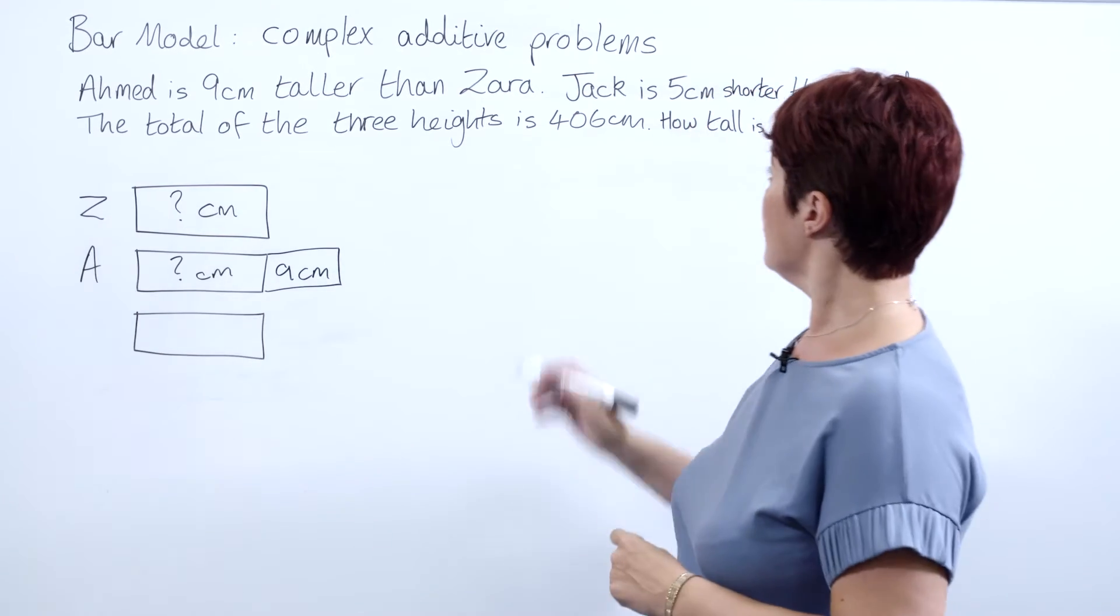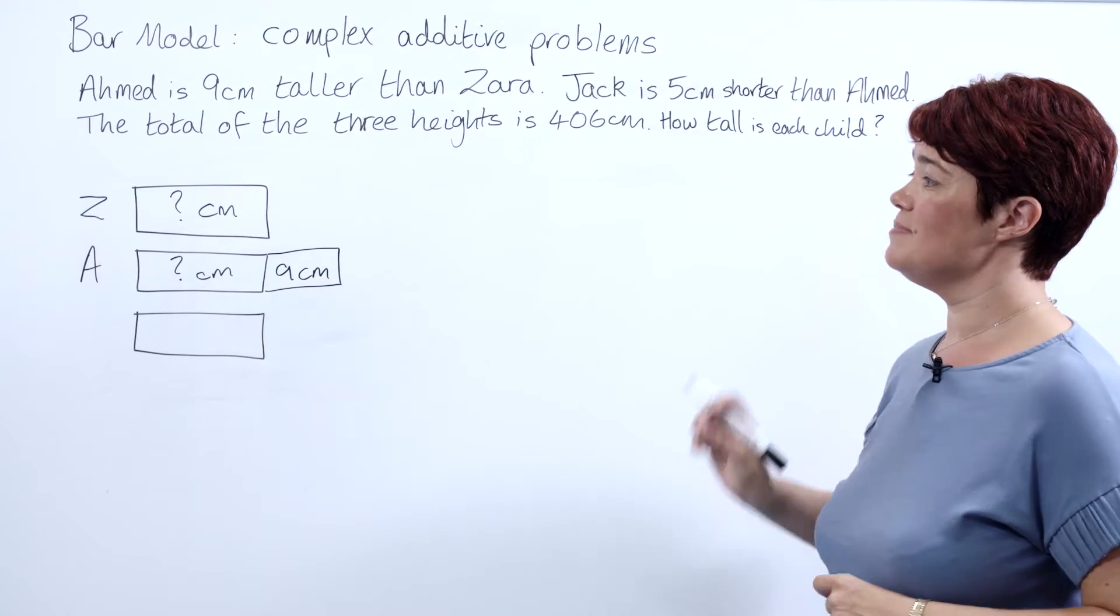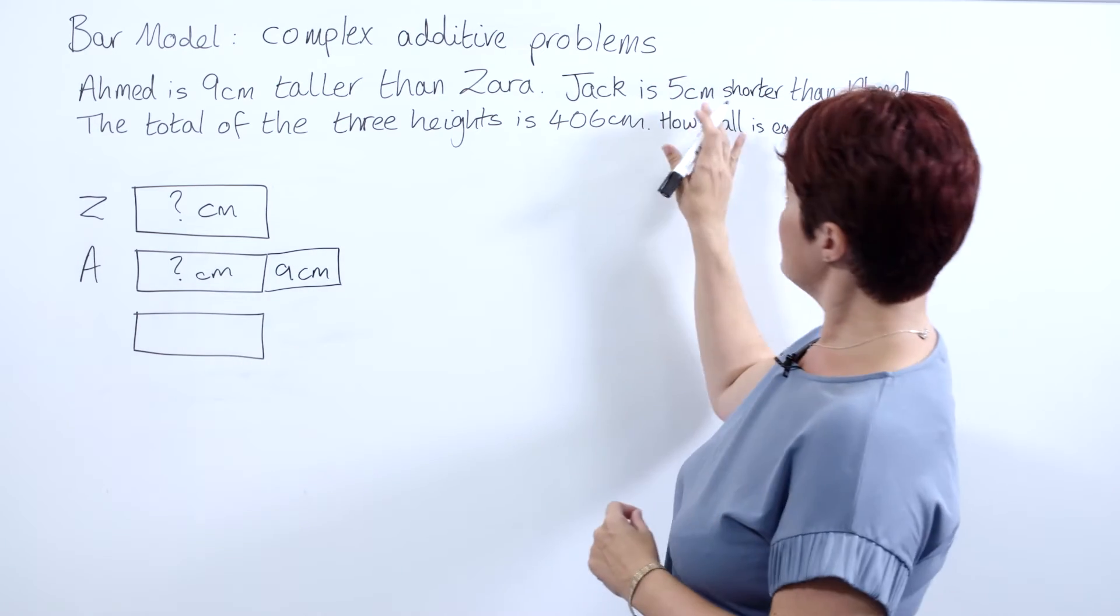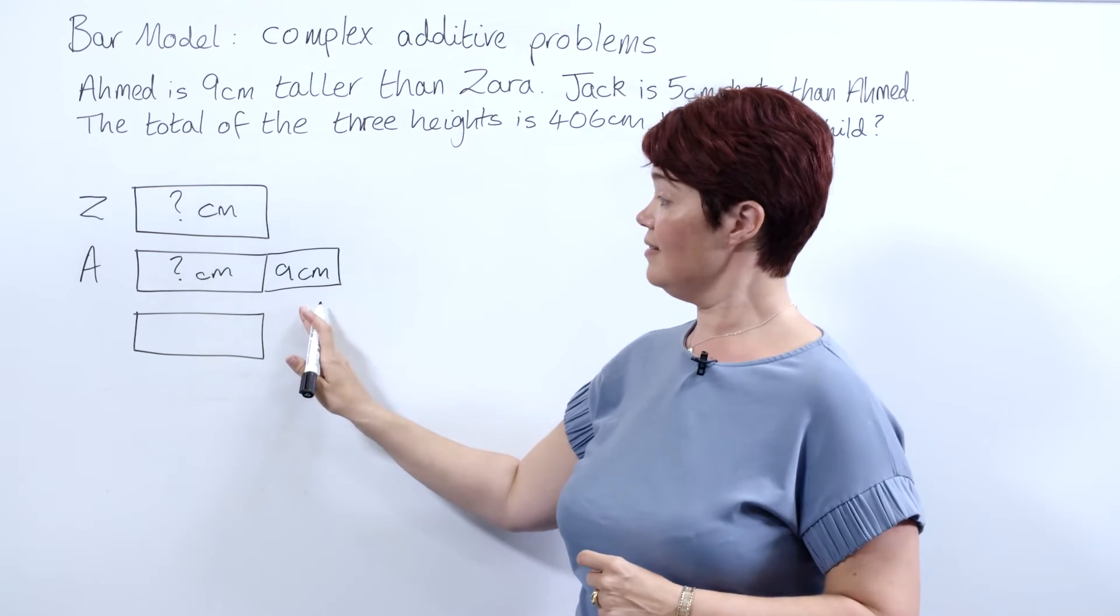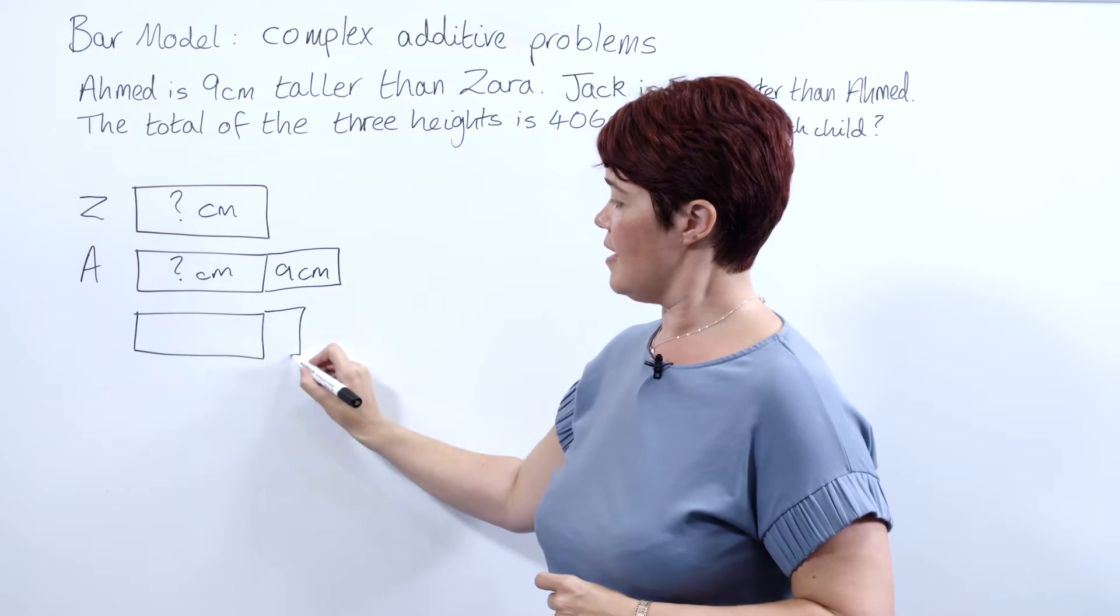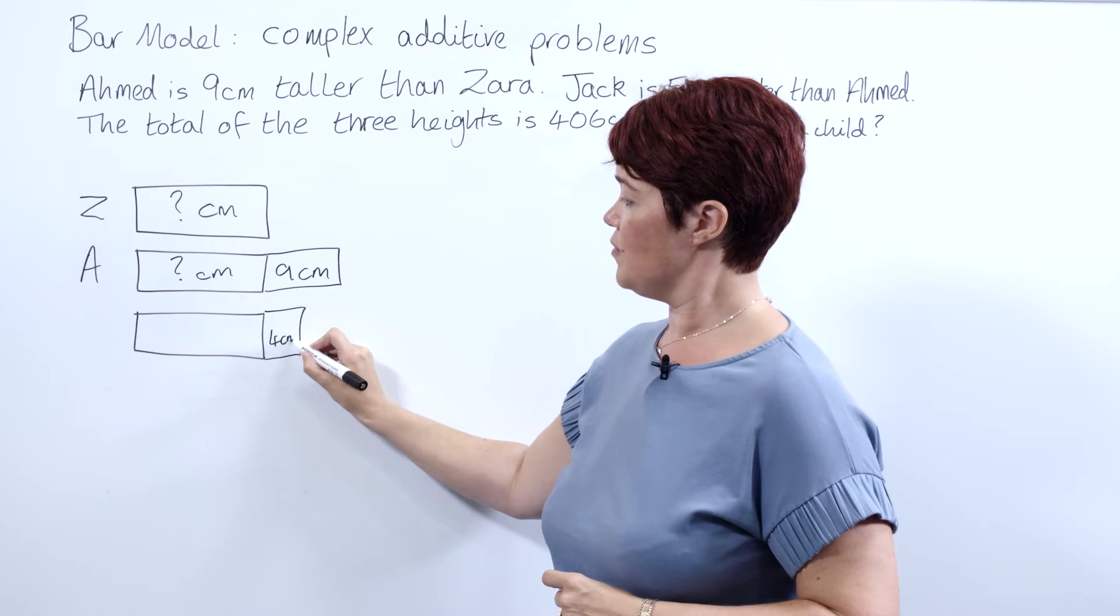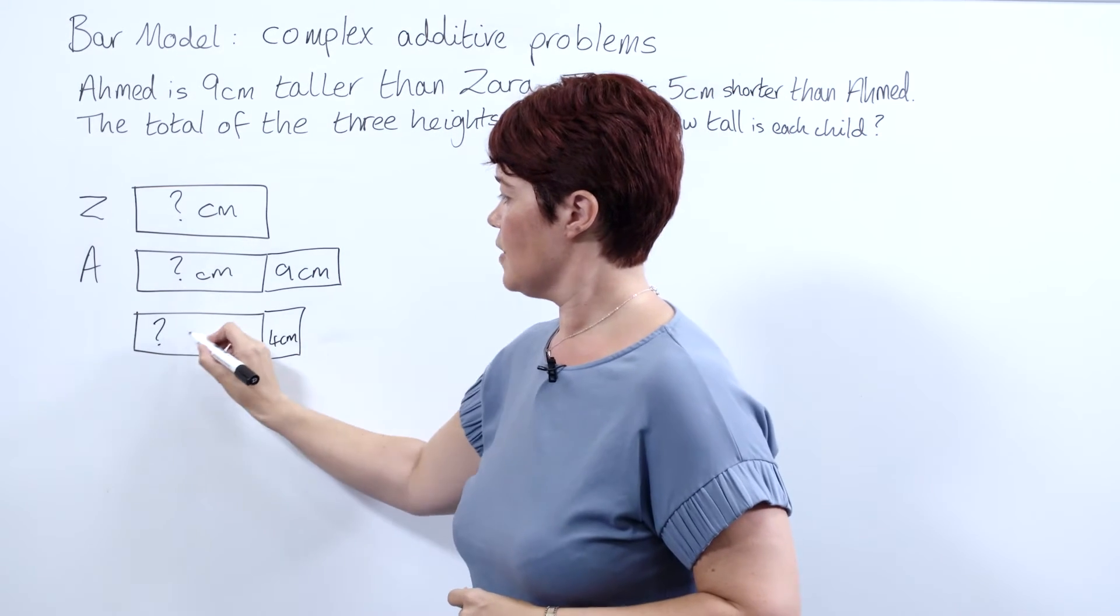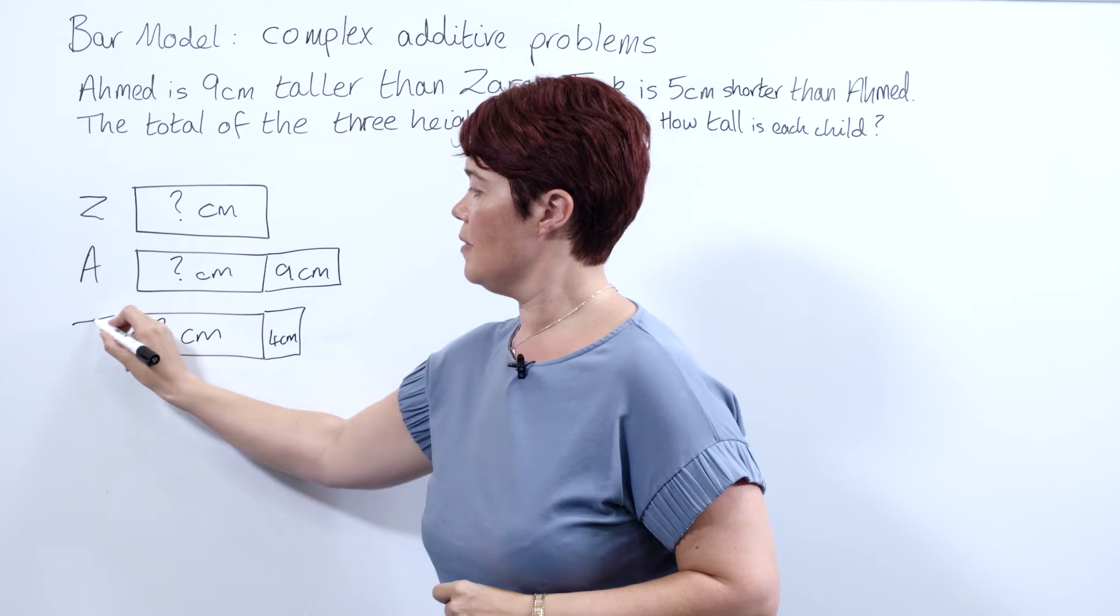Jack is 5 centimeters shorter than Ahmed. We can see here if we're going to take away that 5 centimeters, it's simply the same as having 4 centimeters taller than Zara. So we still have our unknown, that is Jack's height.